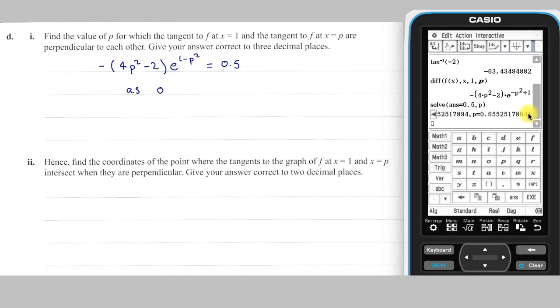As p is between 0 and 3, our answer is p = 0.655.